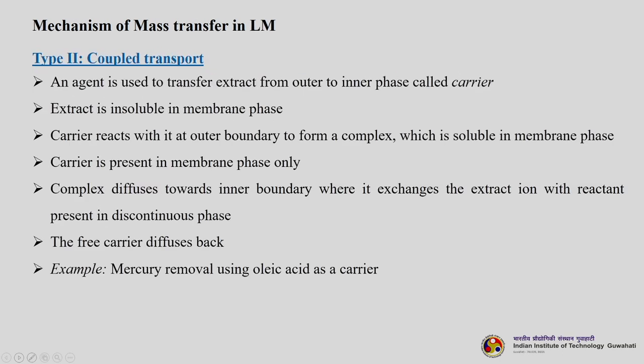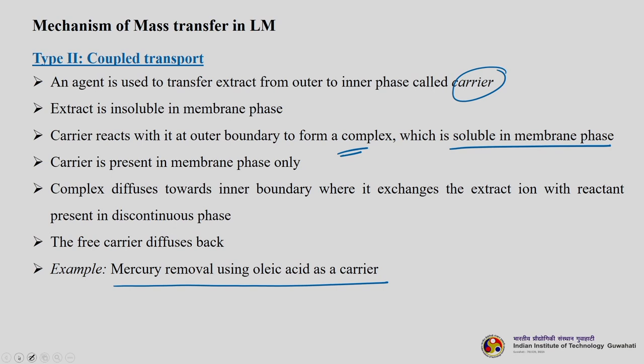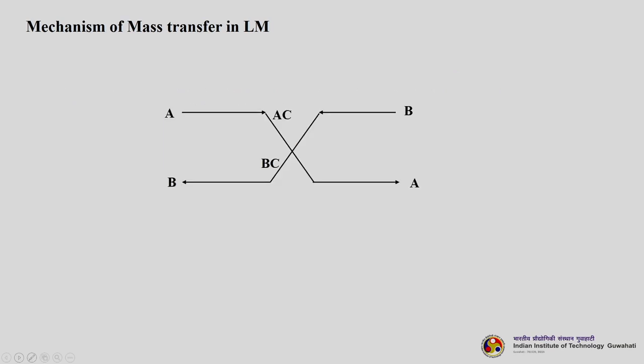The second mechanism is coupled transport, where an agent called a carrier transfers the extract from outer to inner phase. The extract is insoluble in the membrane phase; the carrier reacts with it at the outer boundary to form a complex that is soluble in the membrane phase. The carrier is present only in the membrane phase. The complex diffuses towards the inner boundary where it exchanges the extract ion with the discontinuous phase reactant. The carrier becomes free and diffuses back. A classic example is mercury removal using oleic acid as a carrier.